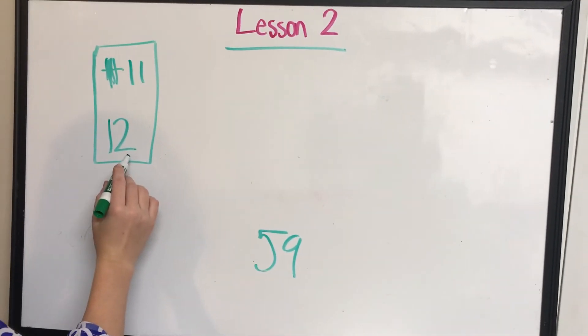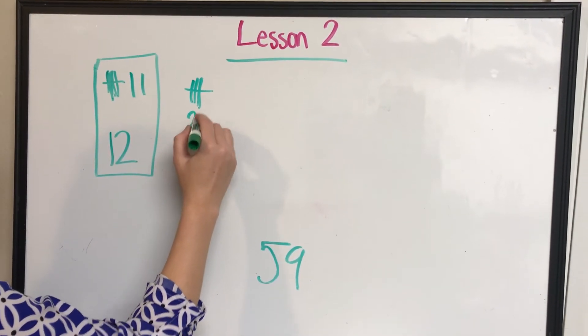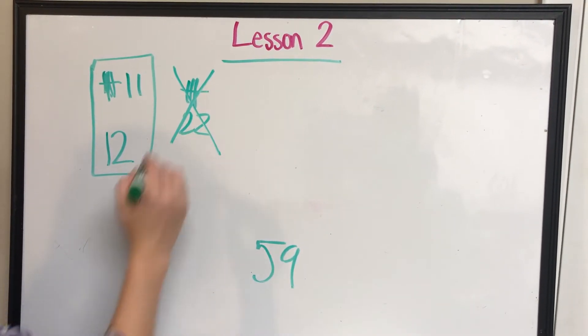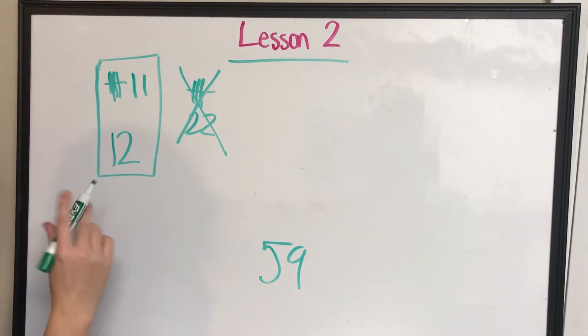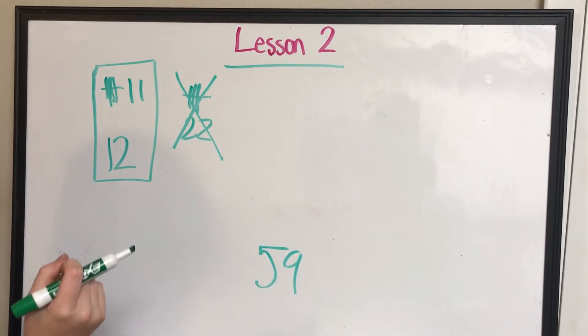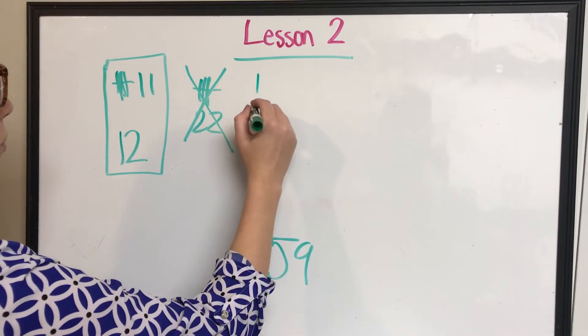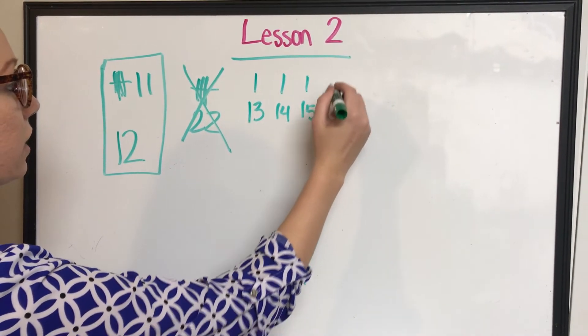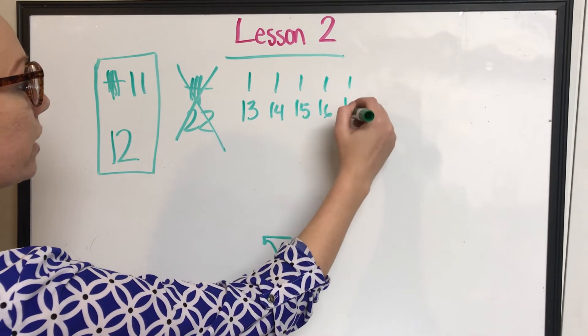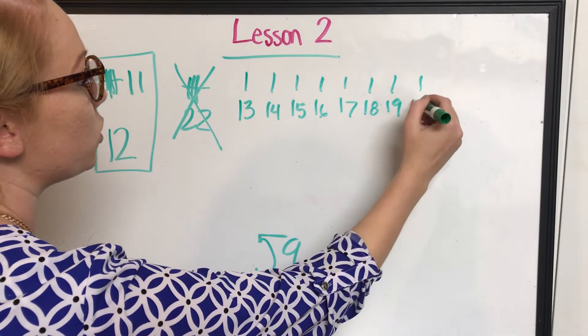I'm at 12. I cannot, I cannot add a tens block and call this 22. I cannot do that. I am going to have to use ones until I get to my full, solid tens number. So I'm going to use a 1. That'll be considered 13. A 1, that's 14. A 1, that's 15. A 1, that's 16. A 1, that's 17. A 1, that's 18. Then my 19. And then my 20.